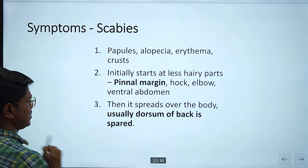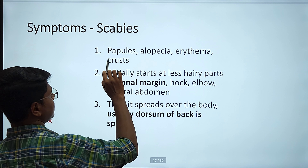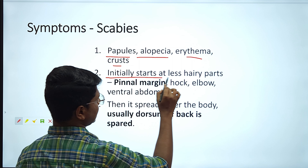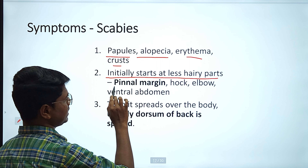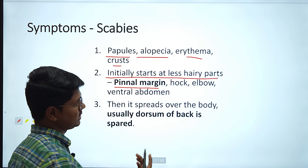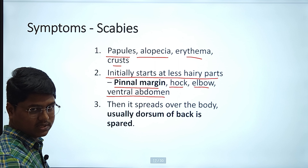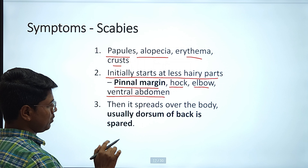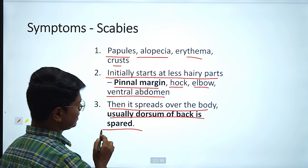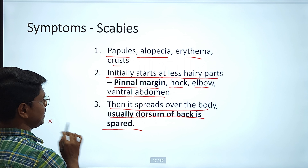Now the symptoms of scabies. In scabies you will find papules, alopecia, erythema, and crusts — just like demodicosis. But the initial lesions start on less hairy parts, most importantly the pinnae margin. Also the hock, elbow, and ventral abdomen — parts with less hair — are affected first. Then it spreads over the body, but usually the dorsum of the back is spared; hair will be present on the dorsum while the rest is hairless. We will see pictures to appreciate this.